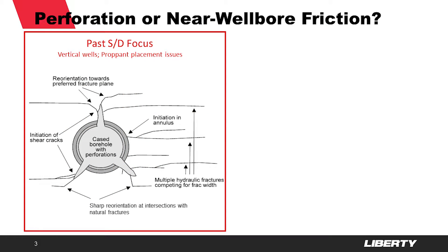The rate step-down test is actually celebrating its 25-year anniversary this year in 2019, and its focus has changed significantly over the last couple of years. Early on, the step-down test was mostly done to assess tortuosity problems or near-wellbore friction problems that may be sourced from perforations that are not in the preferred fracture plane, fracture reorientation, multiple fracture growth near the wellbore — all sources of high near-wellbore friction.